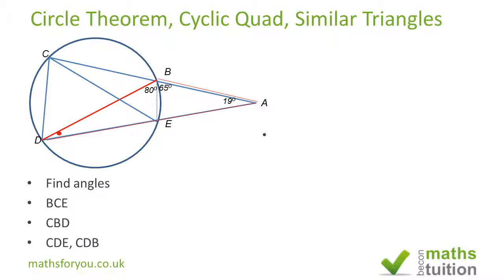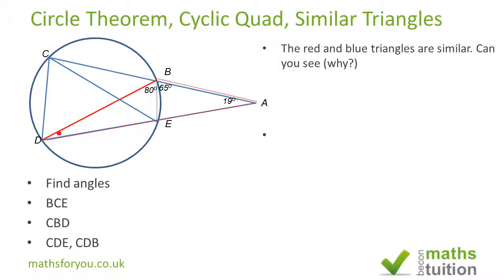In order to find angle BCE, we need to show that the blue triangle — triangle ABC — and the red triangle ABD are similar. To do that, we know that both triangles have 19 degrees in common. The chord subtends this red dot angle at the circumference, and the same chord subtends the blue angle at the circumference, so both angles are equal.